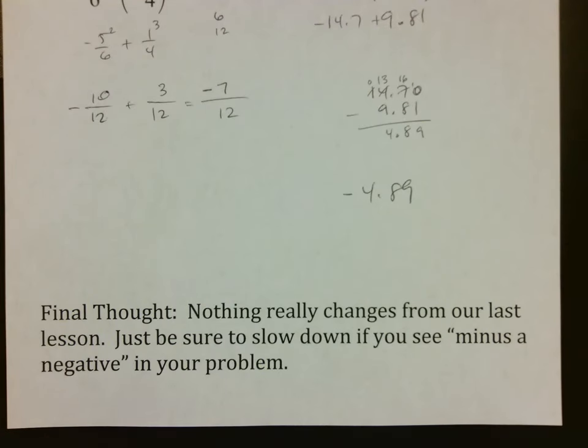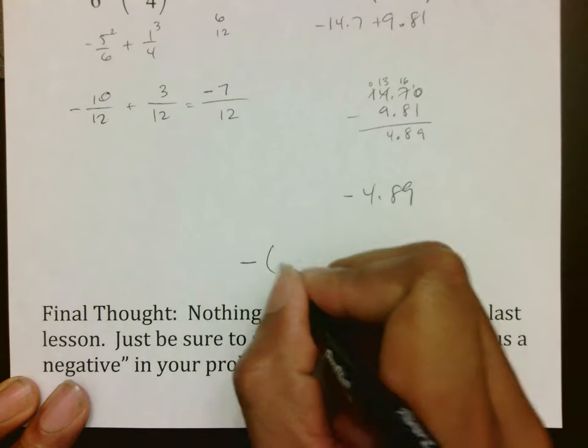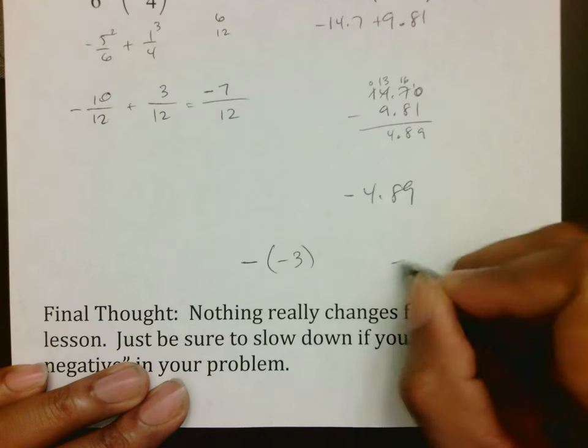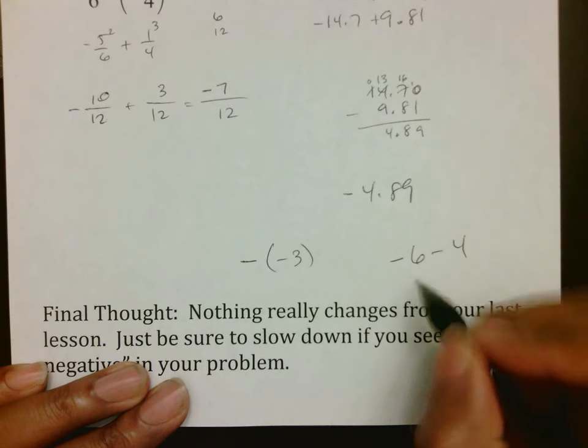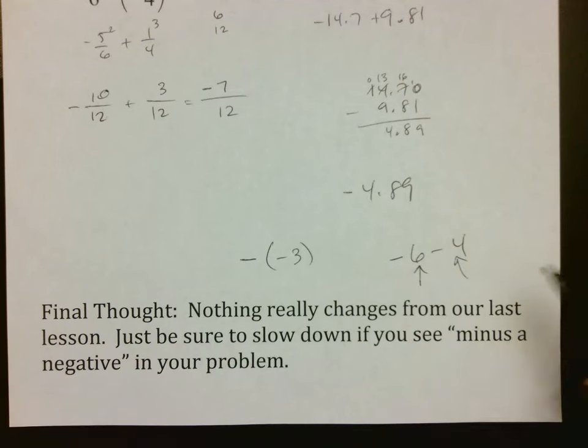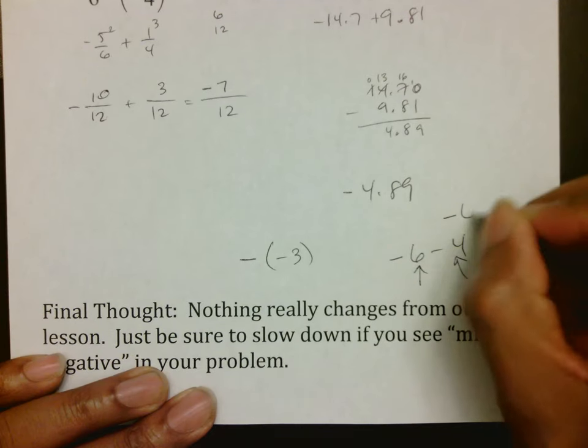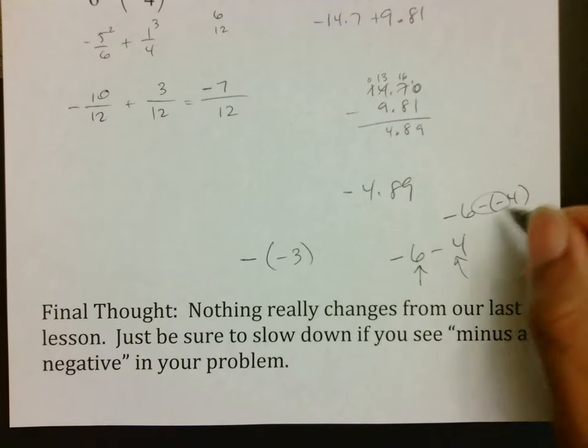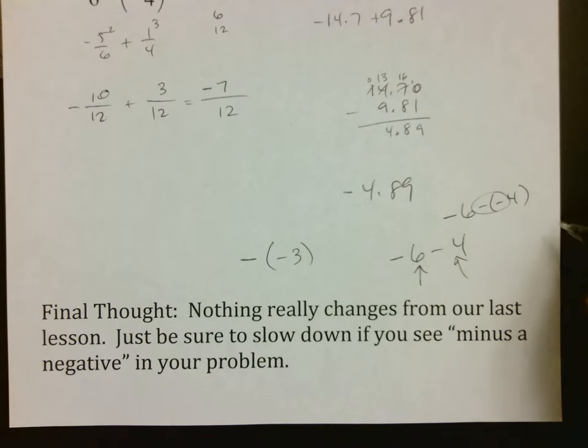Final thought is that nothing really changes from our last lesson, just be sure to slow down if you see minus and negative. Anytime you see a minus sign followed by a negative number, I would just go ahead and slow down a little bit. We understand that whenever we have negative 6 minus 4, that this is a negative 6 and a negative 4 being combined, which is what we did last lesson. It's whenever you bump into negative 6 minus negative 4 that you need to be careful of because of that double negative there.